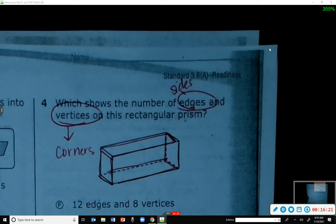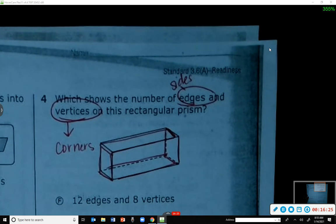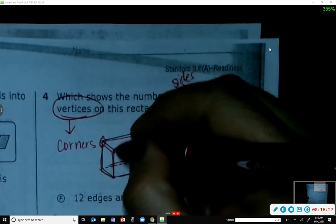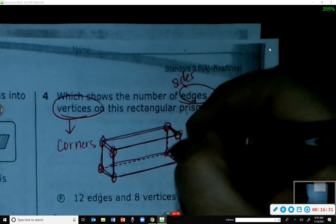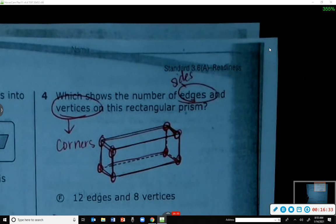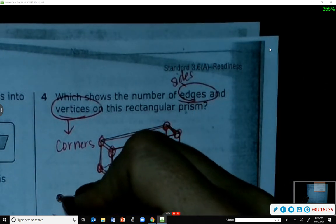So I'm automatically going to eliminate G and J. Now I need to count the vertices. What did you get, Allie? I got eight. Eight, good. So one, two, three, four, five, six, seven, eight. So F would have been the correct answer.